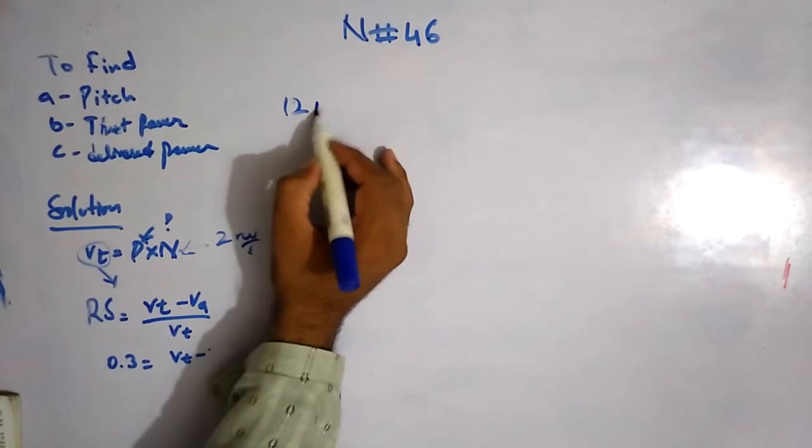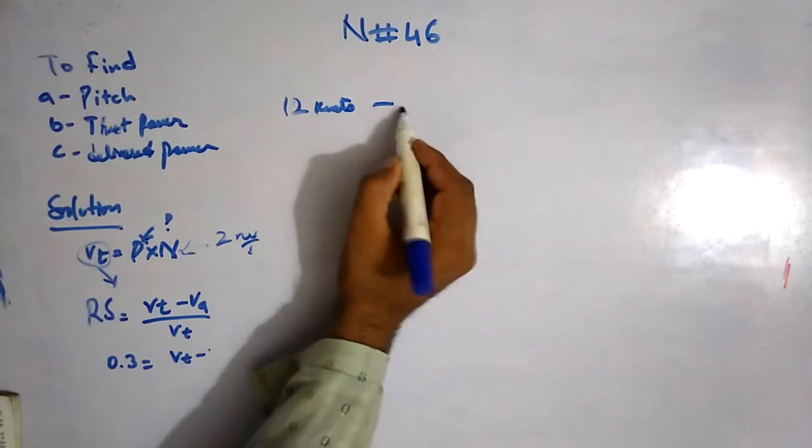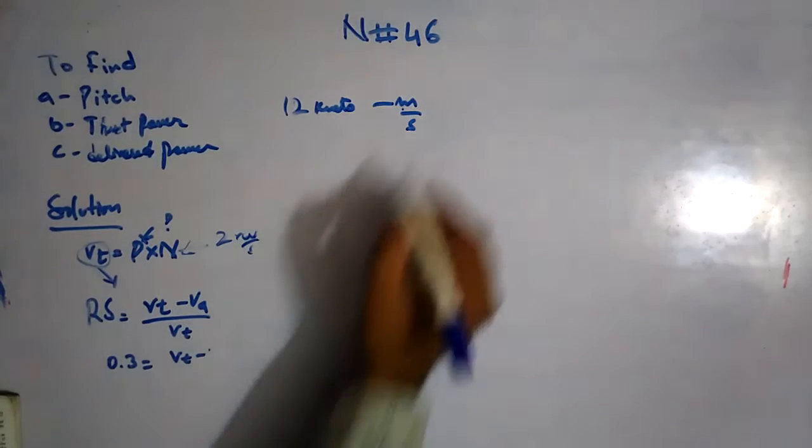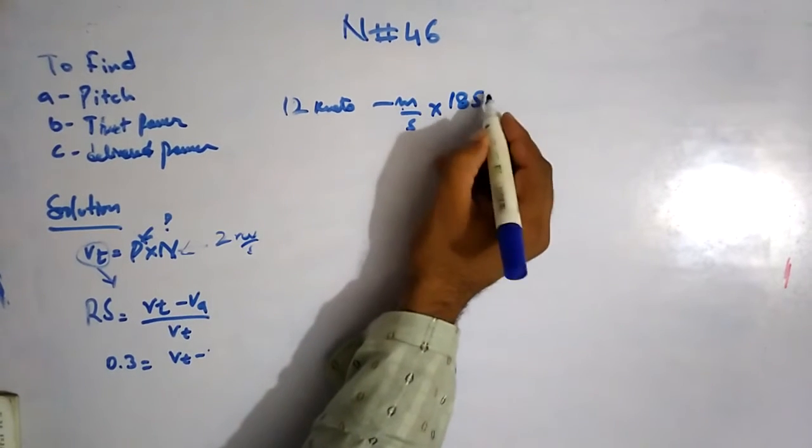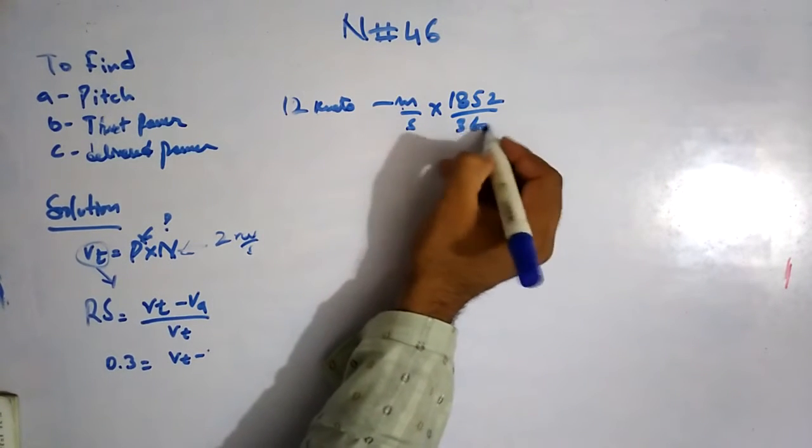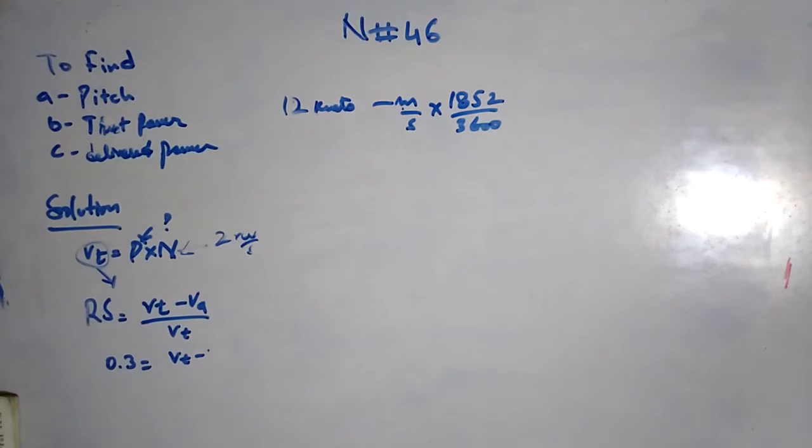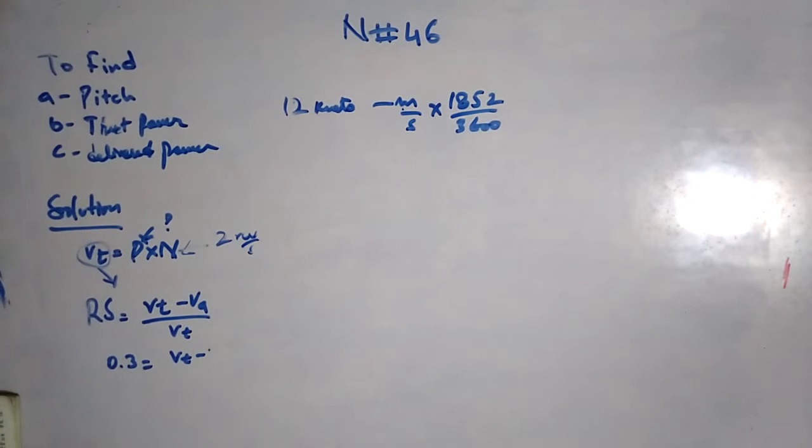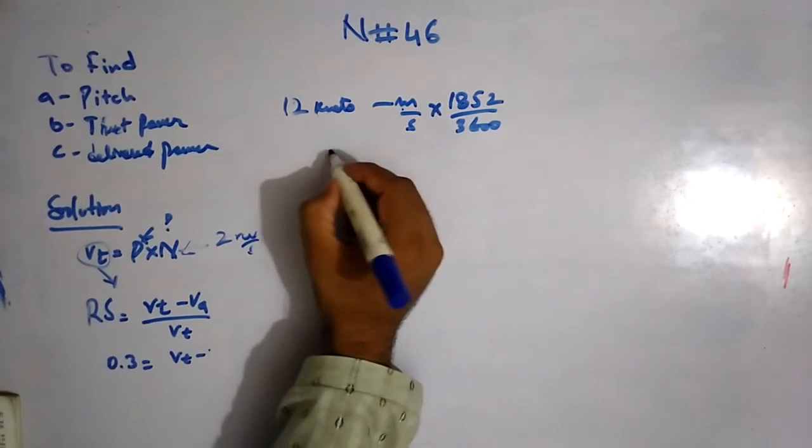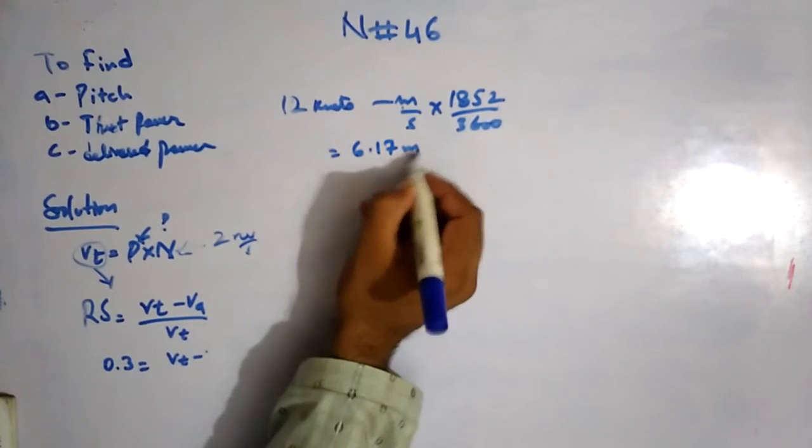So converting 12 knots into meters per second: we multiply knots by 1852 divided by 3600. So 12 times 1852 divided by 3600 equals 6.17 meters per second.